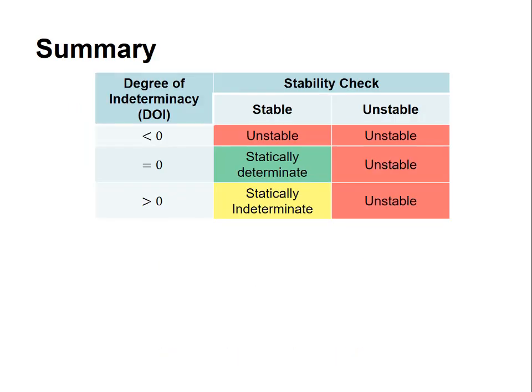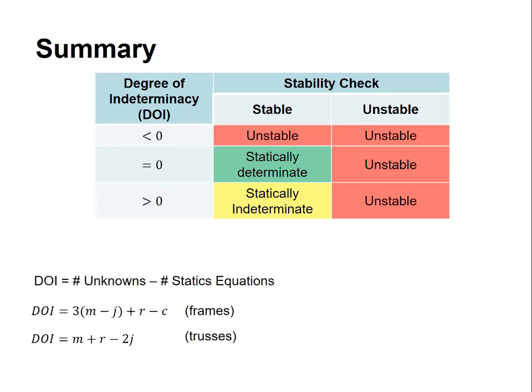And now we've arrived at the end of the three videos. Let's go back to the chart that I presented in the first video. We classify our structures according to the degree of indeterminacy and according to the stability check. In previous videos we saw that the DOI or degree of indeterminacy is equal to the number of unknowns minus the number of available statics equations. And there are two different expressions that we can use depending on whether your structure is a frame or whether your structure is a truss.